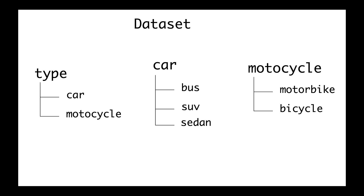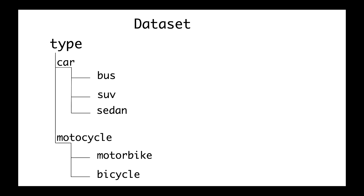Consider the following dataset structure. We have one root folder that contains different subfolders where each subfolder represents one class at a certain level. At level zero we have the root folder — the vehicle type. At level one we have two subfolders: one for cars and one for motorcycle. At level two, under the car subfolder we have bus, SUV, and sedan; and under motorcycle we have motorbike and bicycle. This structure can be used for both a flat classifier and a hierarchical classifier.